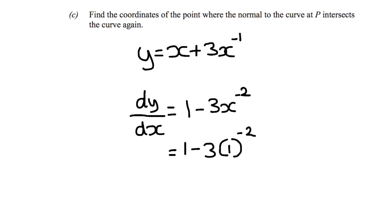Now 1 raised to the power of negative 2 is 1, so we have 1 minus 3 times 1. 3 times 1 is 3.